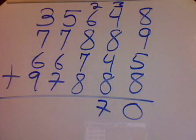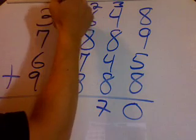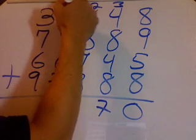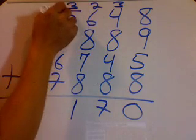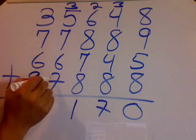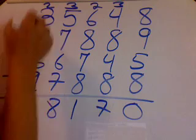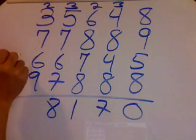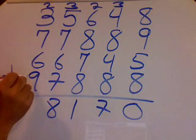Then 2 and 6 is 8, plus 8 is 16, plus 7 is 23, plus 8 is 31. Then 3 plus 5 is 8, plus 7 is 15, plus 6 is 21, plus 7 is 28.